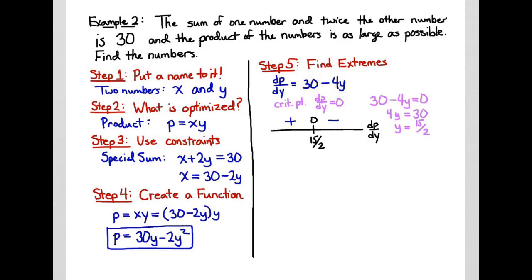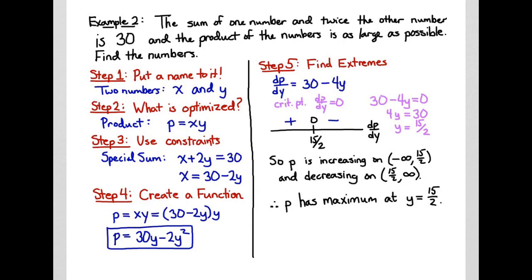This allows me to calculate my sign analysis for my derivative. I then interpret my sign analysis: the interval where my derivative is positive is where my function is increasing, and the interval where my derivative is negative is where my function is decreasing. Because I'm increasing up to fifteen halves and then decreasing afterwards, I know that p has a maximum at y equals fifteen halves.